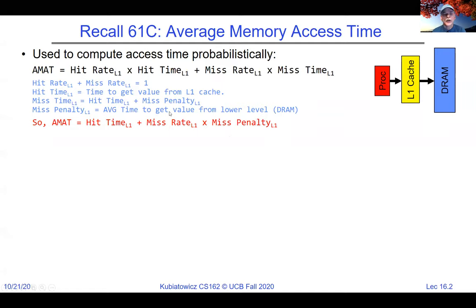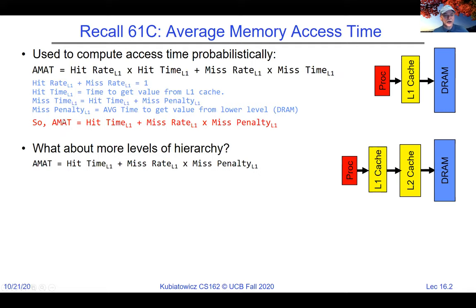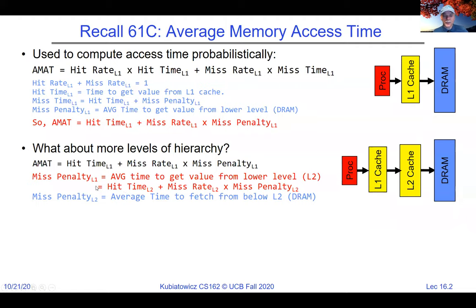Another way to talk about average memory access time — which I often prefer — is really the hit time plus the fraction of time you miss times the miss penalty. Why do I like this one better? Suppose we've got more levels — an L1 cache and an L2 cache to DRAM. We can just take that equation and say the average memory access time is the time to hit in the L1 cache plus the miss rate in the L1 cache times the miss penalty.